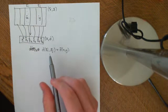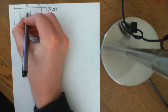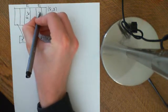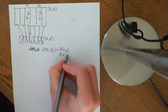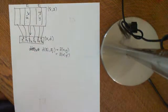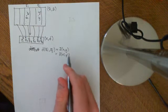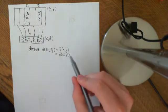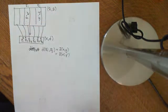We showed in a previous video that this value does not depend on which representative you pick. That is, if you pick a different representative from each of the equivalence classes — say x-prime and y-prime — the pseudometric distance between them is the same, and therefore this definition is well-defined. This holds because of the triangle inequality and because x and x-prime, and y and y-prime, are a distance zero apart from one another.